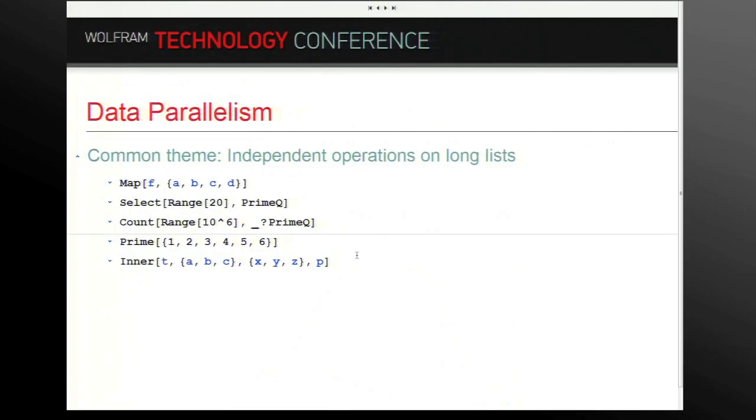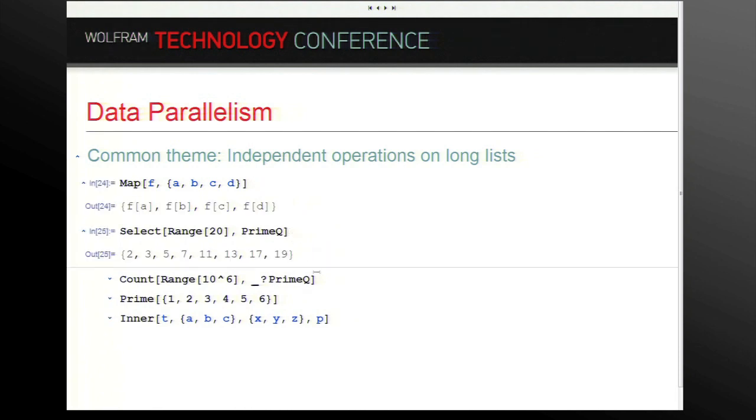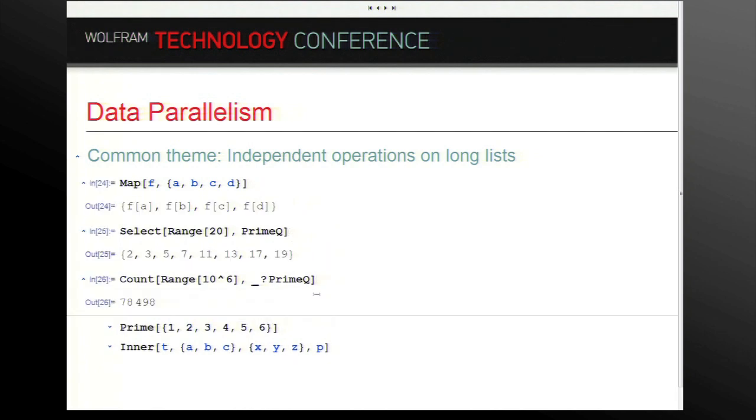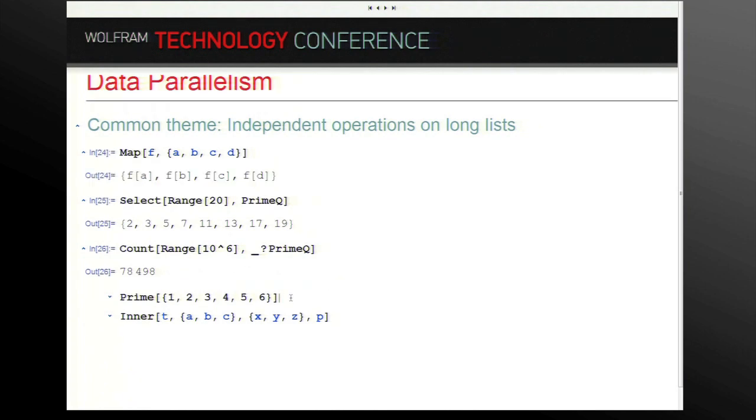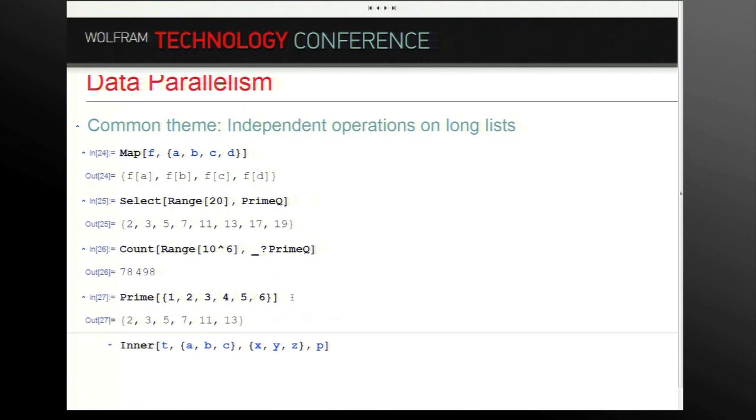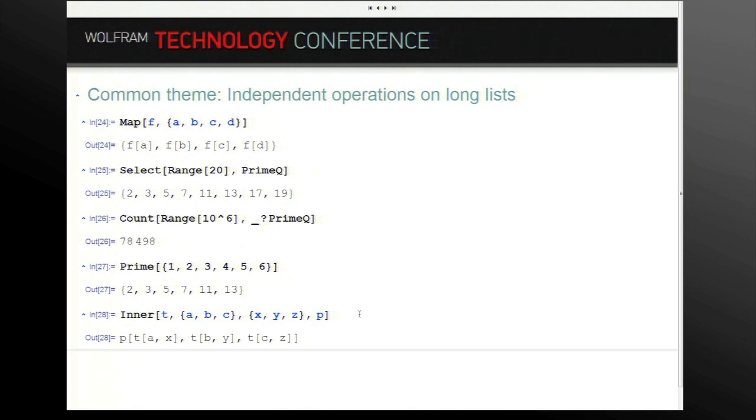One area where the automatic parallelization works quite well is when you do independent operations on long lists. There are many examples of this area. Obviously map is an example, select, counting things that satisfy certain properties.